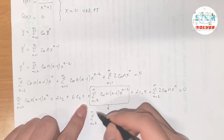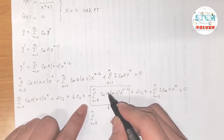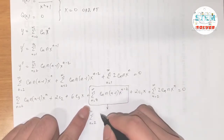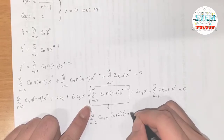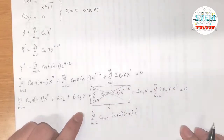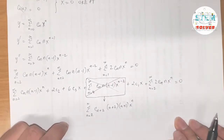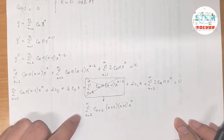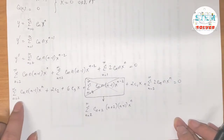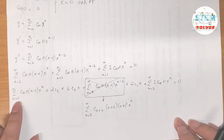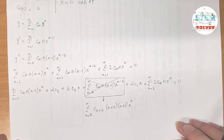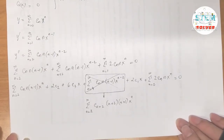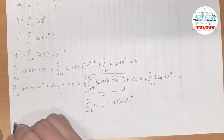Re-indexing the series starting at n=4 down to n=2 means increasing every n by 2 inside, giving Σ c_(n+2)·(n+2)(n+1)·xⁿ. To verify you've re-indexed correctly, all power series should now start at the same n=2 and be multiplied by xⁿ.